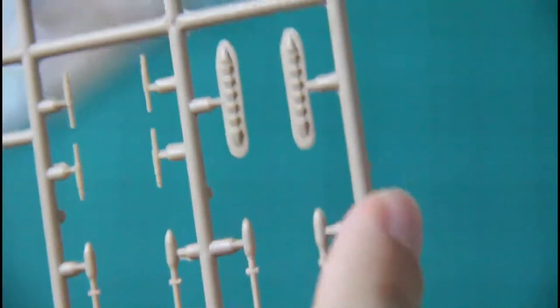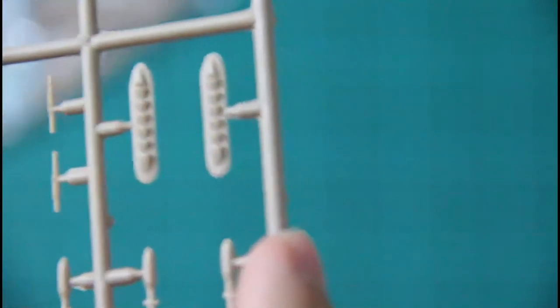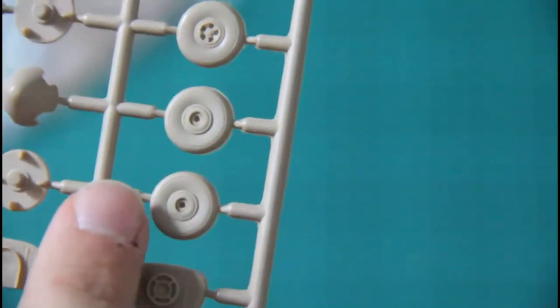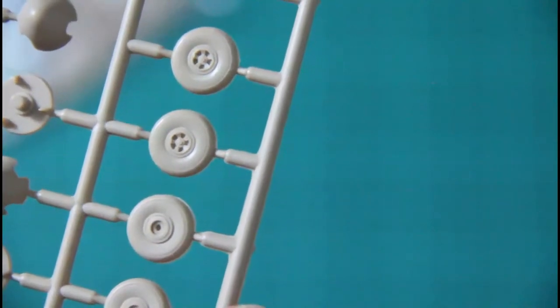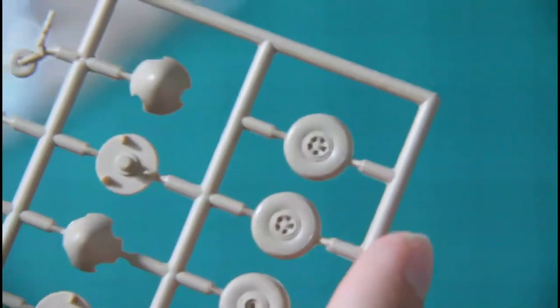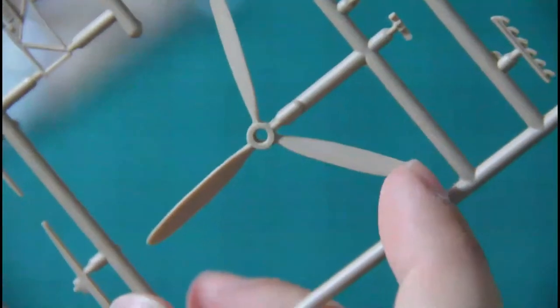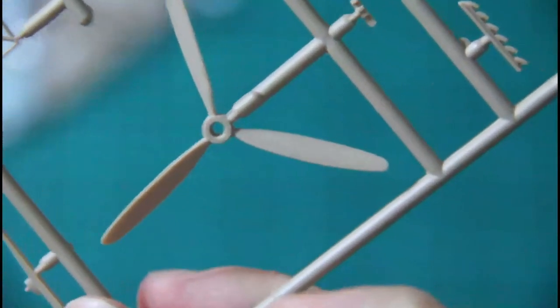These are bombs I think. Also we have another option for the exhausts as you can see, and air intake. Also wheels here, two types of them. And two types of propeller hubs. One is for three bladed and one is for four bladed. Here is three bladed propeller which has only one attachment point. That's pretty much all for the sprue.